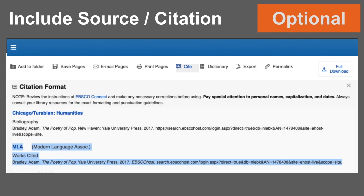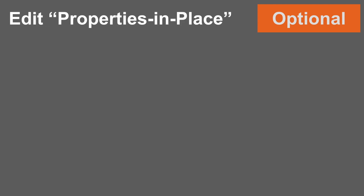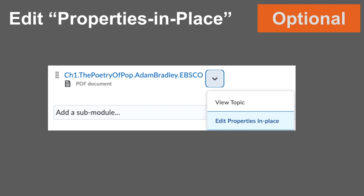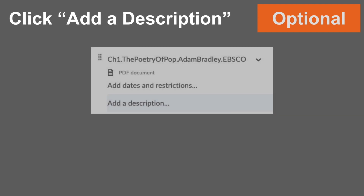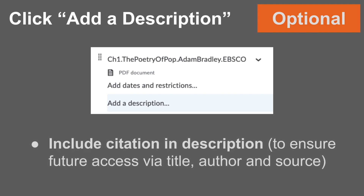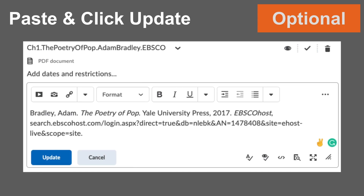One option that we recommend is to include source and citation information with every text that you bring into your course. In this example, I'm using the Cite button within EBSCO to pull the MLA citation that I would like to include inside my class. I click on that Cite button, scroll down to MLA — the Modern Language Association citation format. Then I return to D2L, find that same PDF, click on the drop-down chevron, and choose Edit Properties in Place. You'll want to click on Add a Description in order to edit the description for that text. I'm going to add the MLA citation, which includes the title, the author, and the source, and paste that into the Description section and click on the blue Update button.